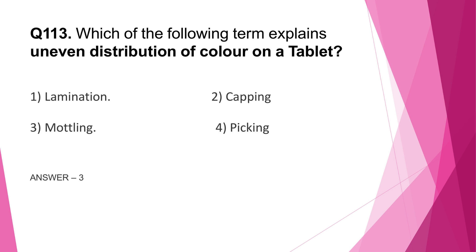Question number 113: Which term explains uneven distribution of color on a tablet — lamination, capping, mottling, or picking? The correct answer is mottling, which is uneven distribution of color on a tablet. These are defects seen in tablets: in lamination there is separation of the tablet into two or more distinct layers; in capping there is separation of the top or bottom crown from the main body; picking is a type of adhesion seen on the tablet. The correct answer is option 3, mottling.